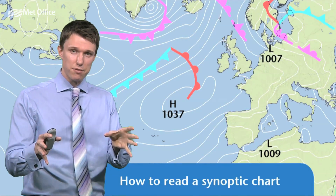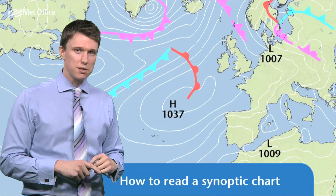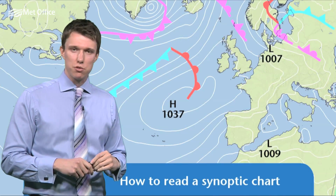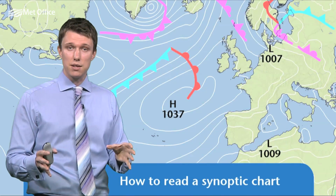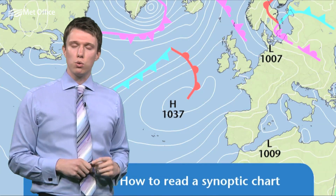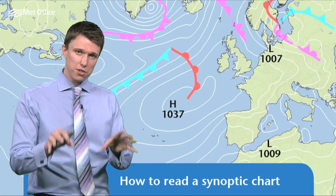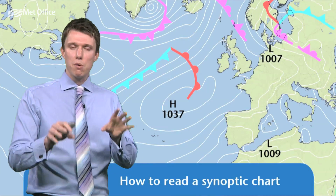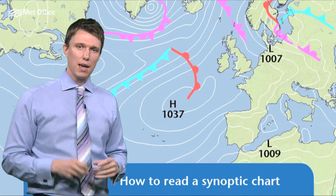These are called frontalytic fronts. And sometimes you may also see a set of fronts which have the triangles and semicircles that are unshaded — these are what we call upper fronts. They're the same as the fronts at the surface, but they mark differences in the air higher up in the atmosphere.